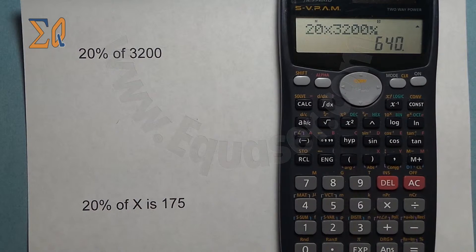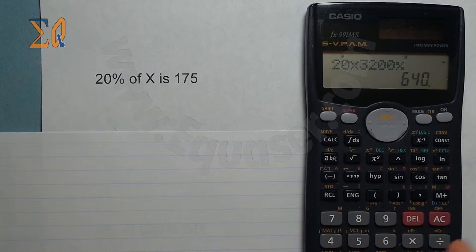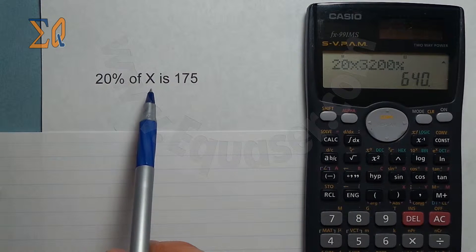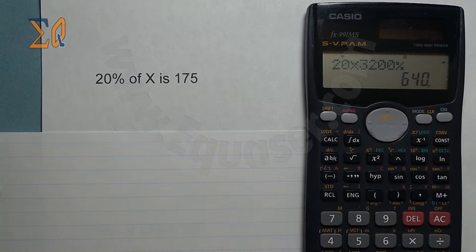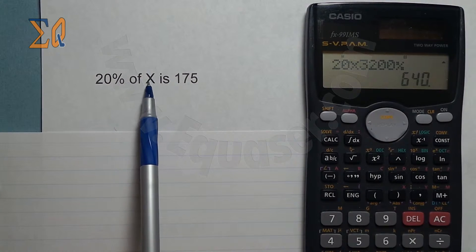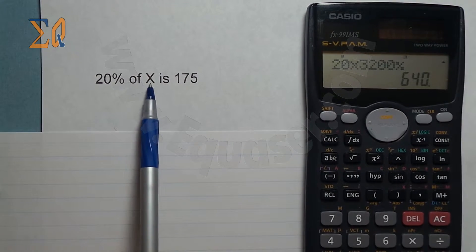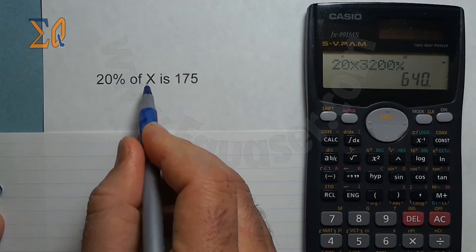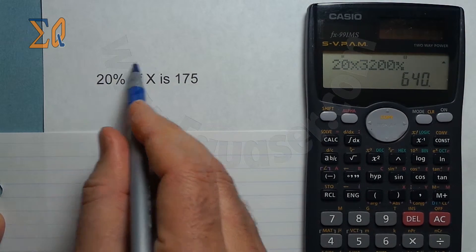Here is the next question. When you are asked to find 20% of some amount which is 175, that means the whole amount is bigger. There is some bigger number that 20% of it is 175. So what we do is we write the things that we know.